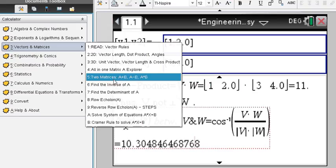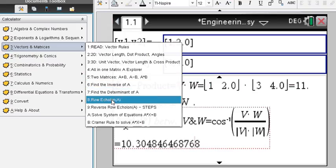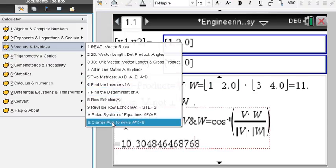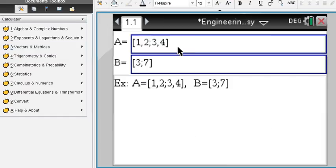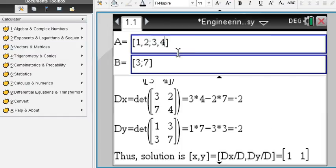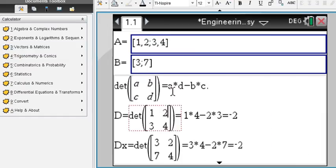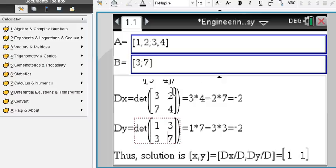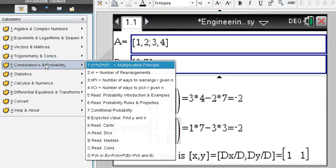So you can see here what else. Inverse determinant, row echelon, Cramer rule. Cramer rule quickly. Enter the two matrices, get your determinants right here, and your final answer down here. 1, 1 again. Okay, let's move on.